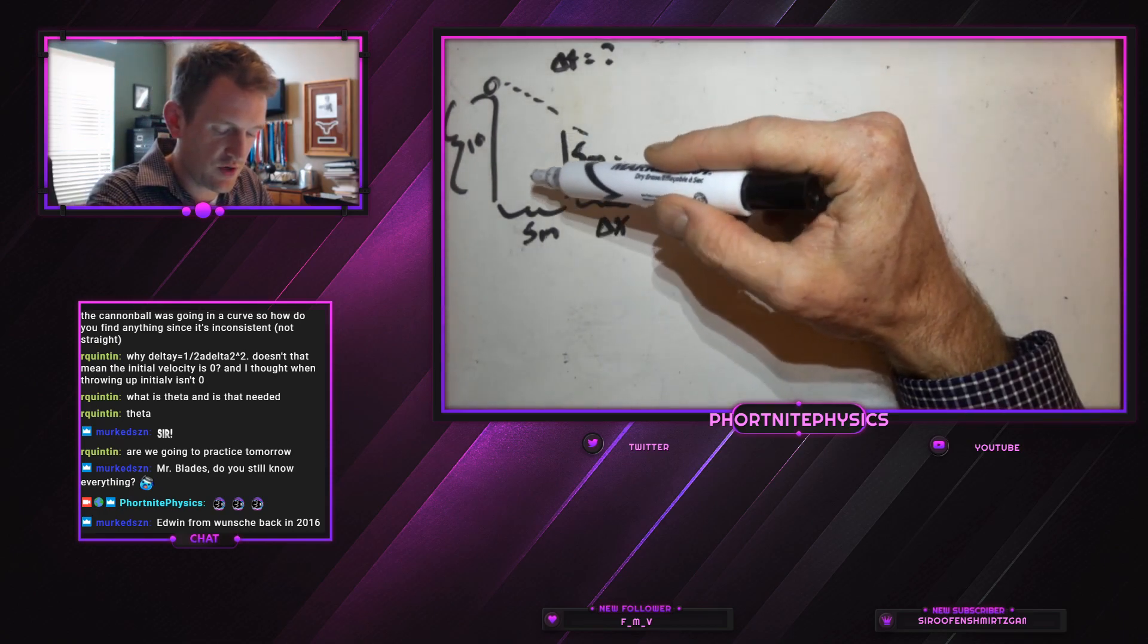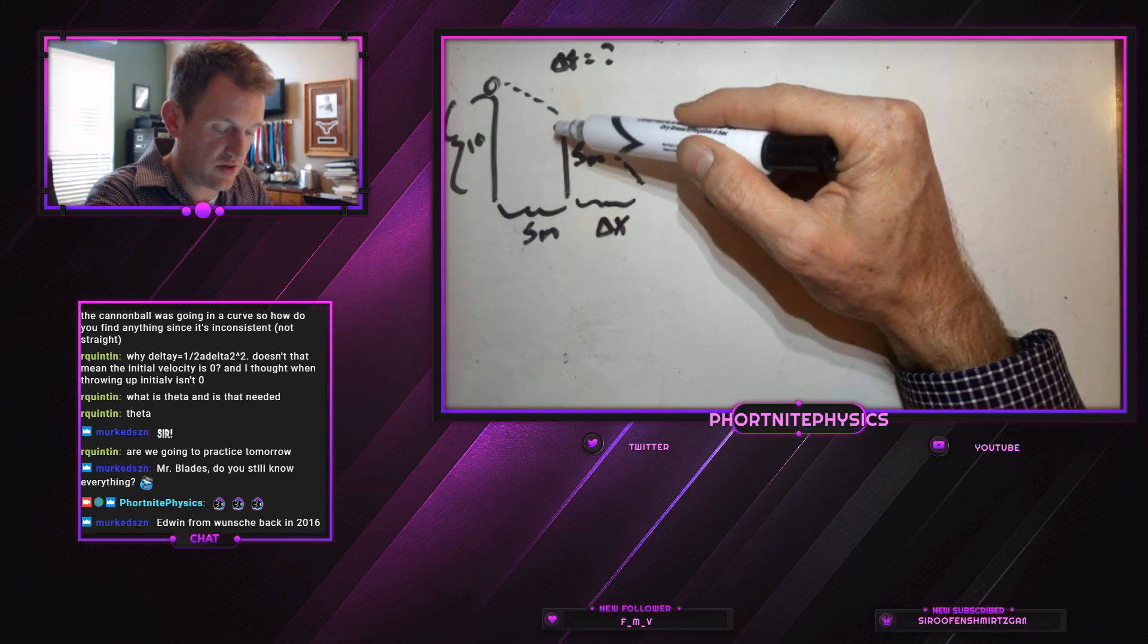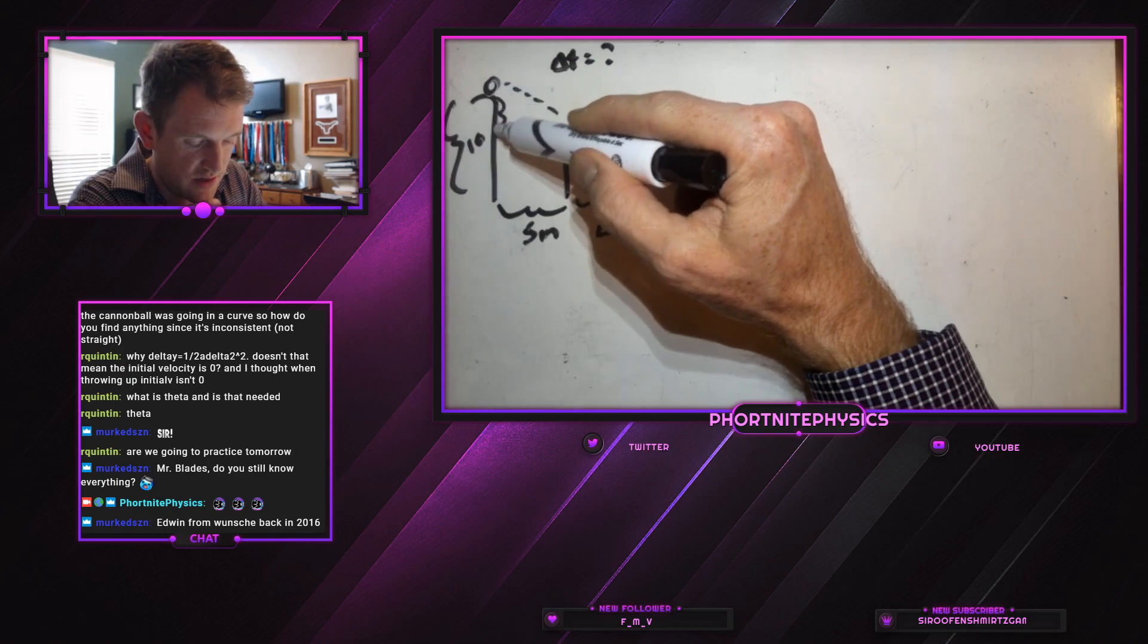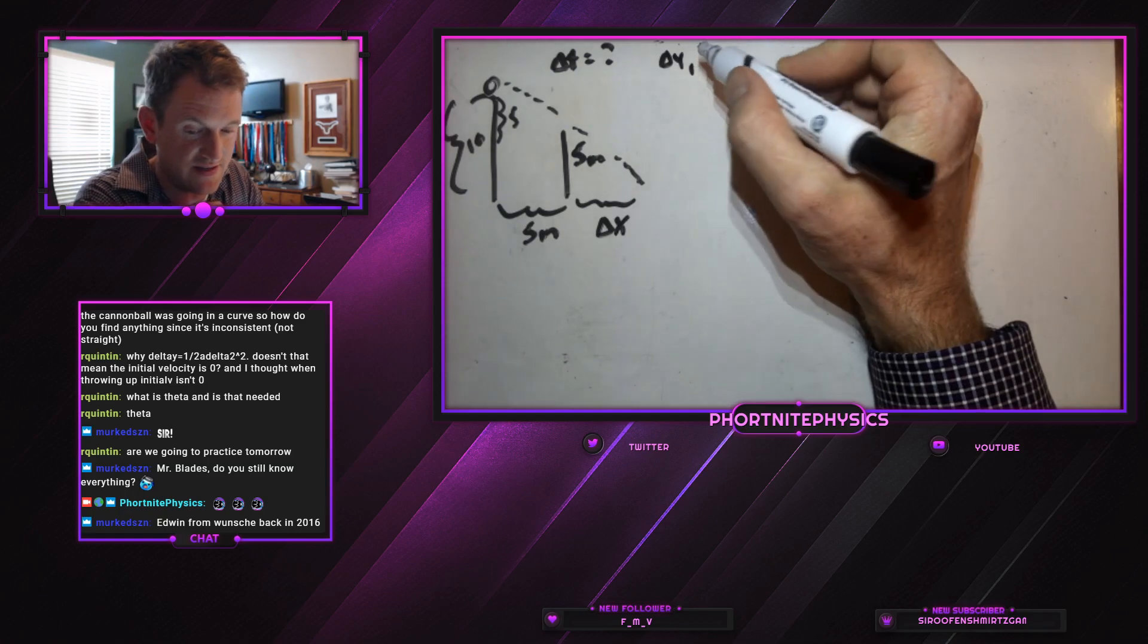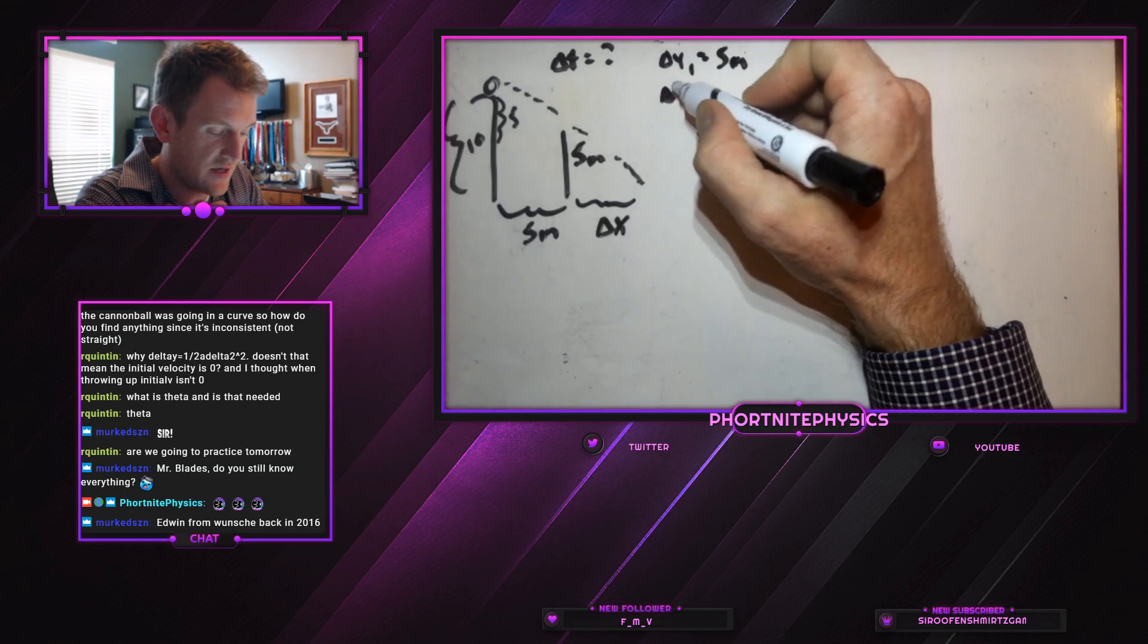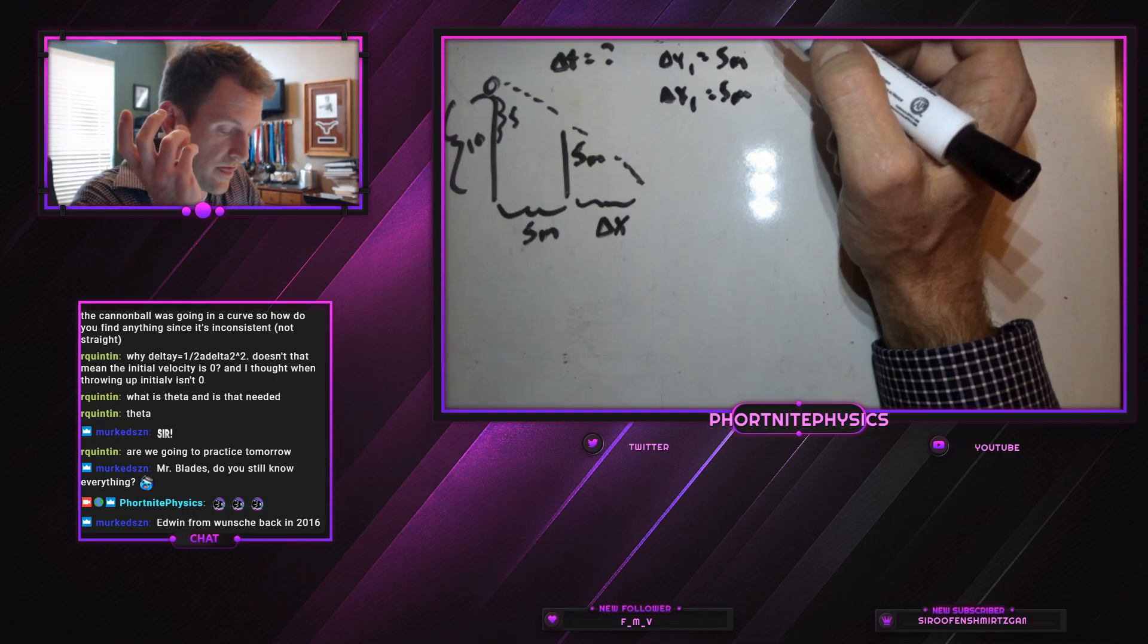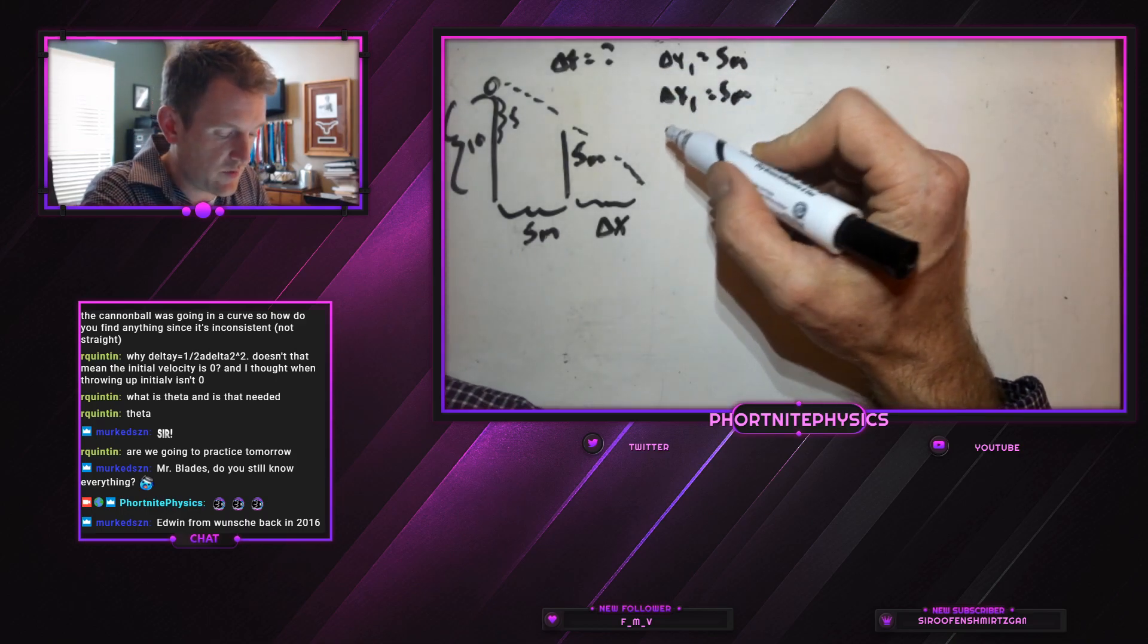So we're going to say that at 5 meters away, the ball had just barely, is just going to be 5 meters off the ground. So our delta Y between here and here is 5. So our delta Y1 is equal to 5 meters, and our delta X1 is 5 meters too. So how long has it fallen to begin with?